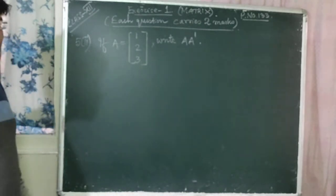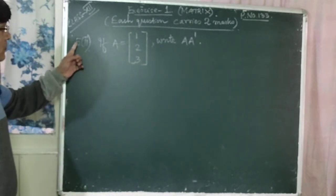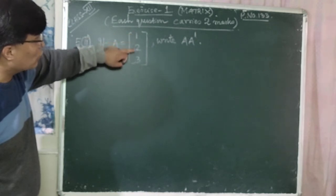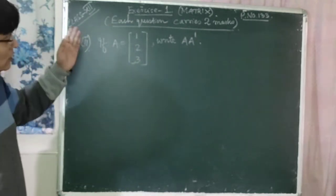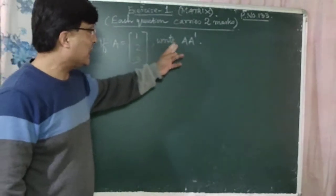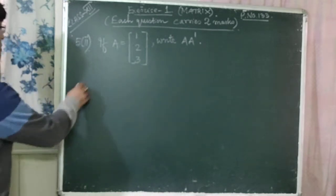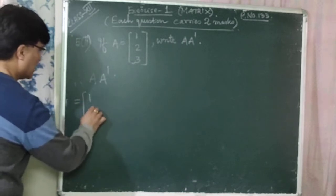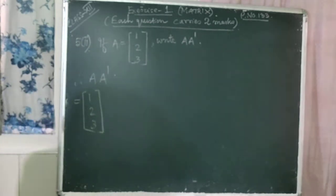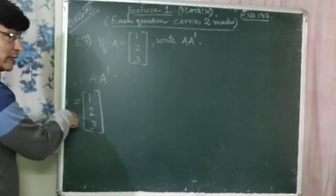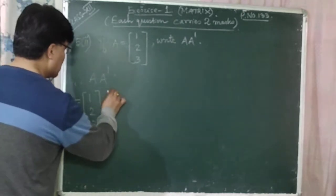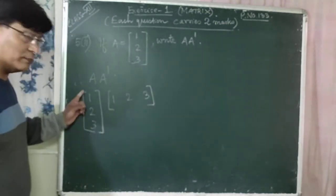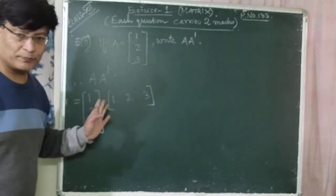Now question number two of question number five. If A is equal to column matrix [1; 2; 3] — only one column, so this is a column matrix — you have to find A times A dash, that is A into transpose of A. A dash is the row matrix [1, 2, 3] — only one row. This is the row matrix. If only one column, it's a column matrix; if only one row, it's a row matrix.